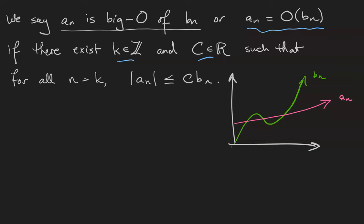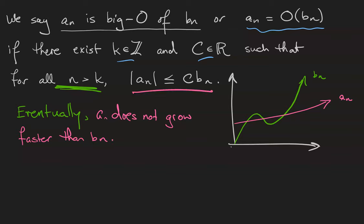This definition is really technical, so I think it's helpful to have this other formulation which says eventually, this eventually signified for the n greater than k part, aN does not grow faster than bN, signified by the inequality involving aN and bN.